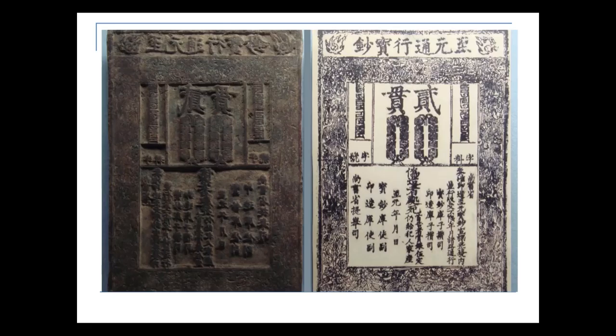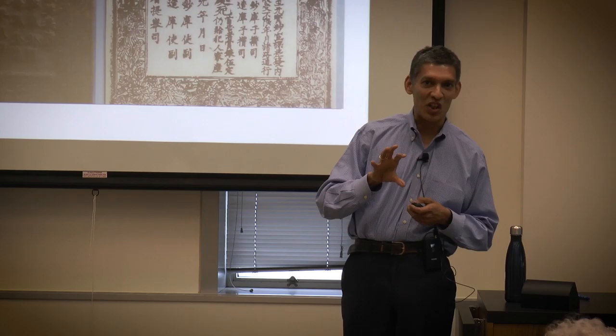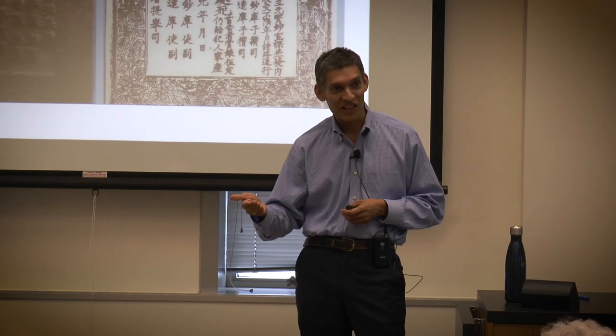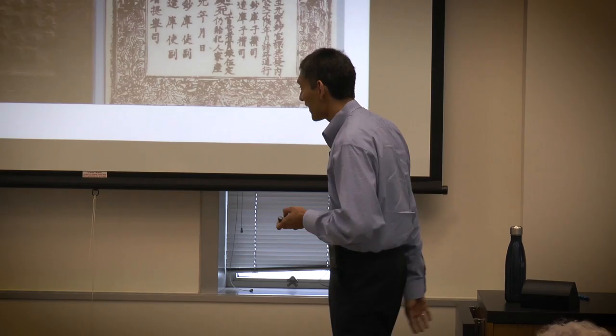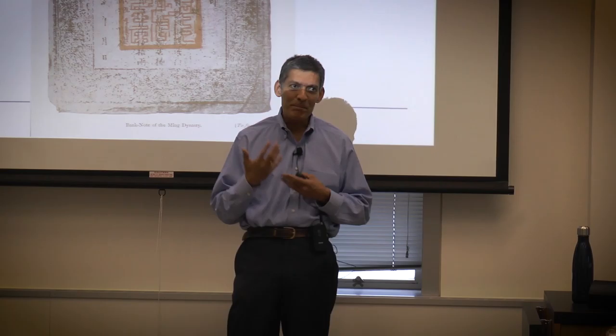This is a note that appeared during the Yuan dynasty. It's printed on wood blocks in the form of paper on what is essentially mulberry bark. Some of the writings on this note are interesting. In the bottom block, it says that any counterfeiters of the note will be put to death. And more interestingly, whoever reports the counterfeiters will receive five yen of silver as a reward, and in addition, all the family property of the counterfeiters — quite an incentive to get counterfeiting out of the way.